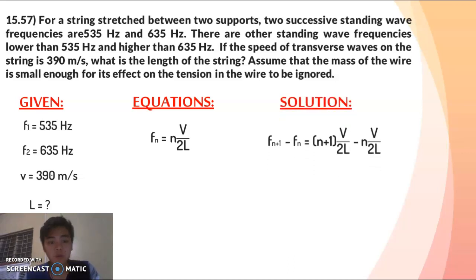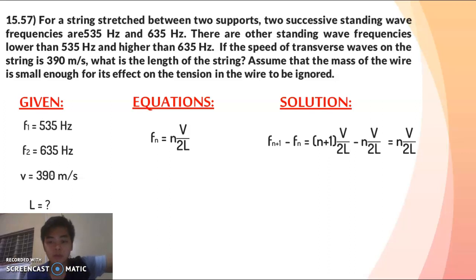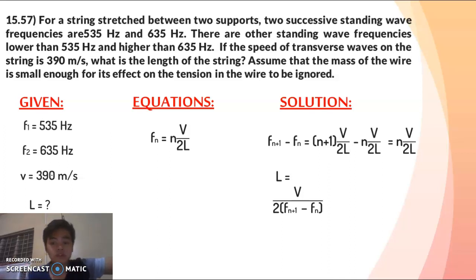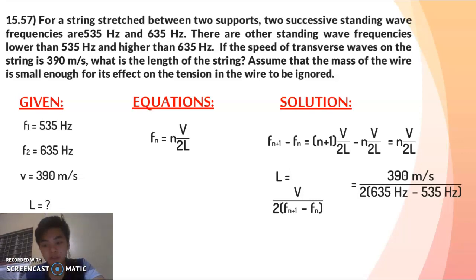To solve, we subtract consecutive frequencies: f_(n+1) minus f_n equals (n+1)(v/2L) minus n(v/2L), which simplifies to v/(2L). Rearranging, L equals v divided by 2 times (f_(n+1) minus f_n). Substituting: L equals 390 meters per second divided by 2 times (635 hertz minus 535 hertz), giving a length of 1.95 meters.